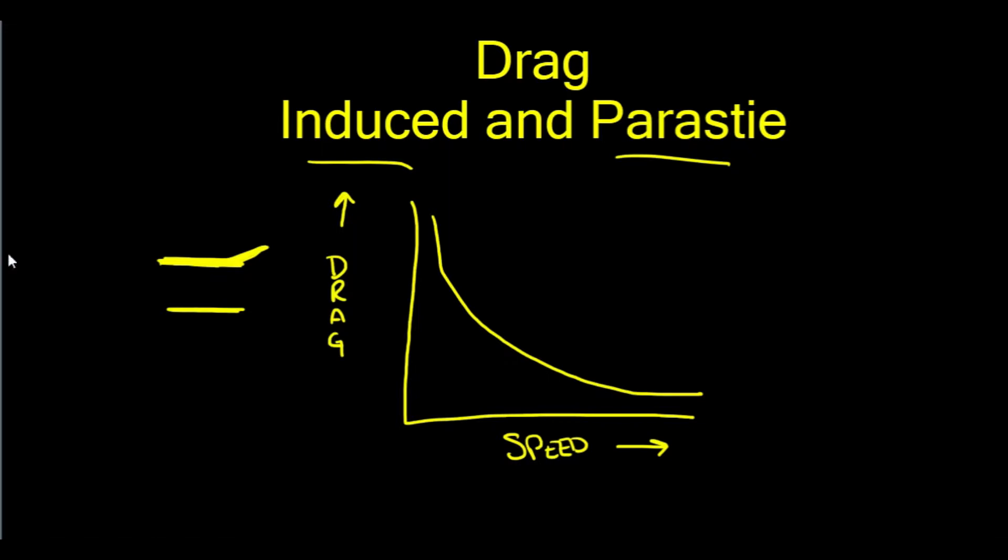Our ailerons aren't pointed down or pointed up either. So, all else equal, the faster we go, the less drag we create, or induced drag.